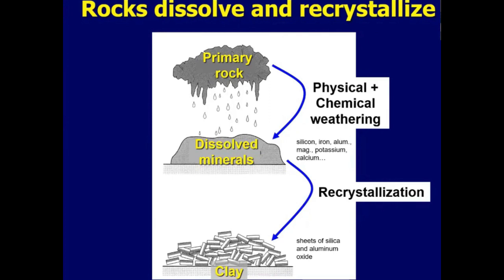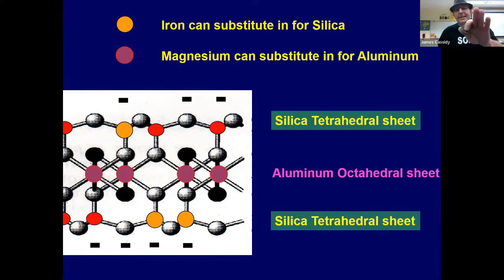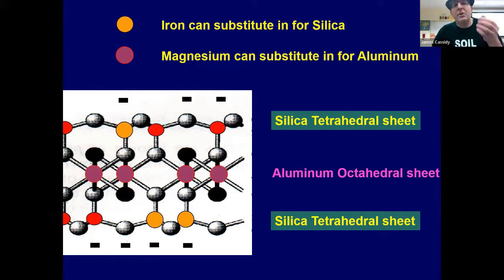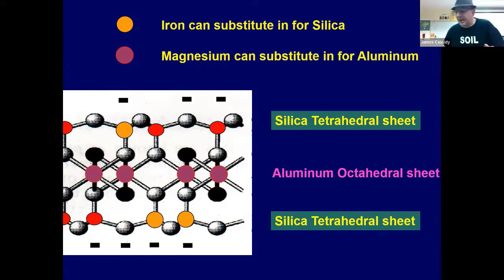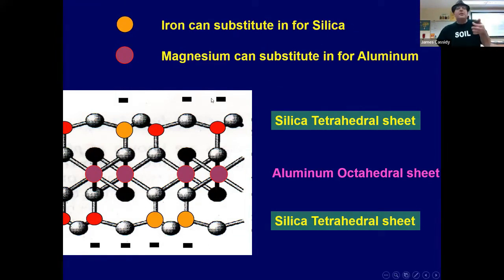Clay is a very, very tiny layered high-surface-area material that has a negative charge on it. And you know what sticks to negatively charged things? Positively charged things. And the charge on most mineral nutrients that you need in your body? Positively charged. So a positively charged nutrient that dissolves out of the rock sticks temporarily onto clay.